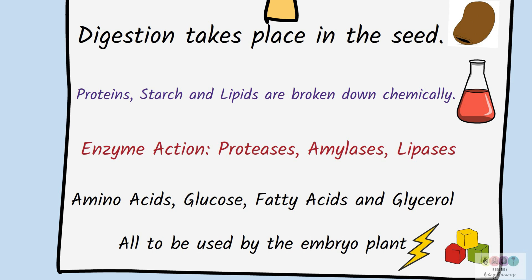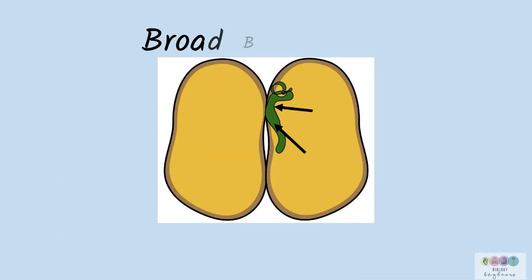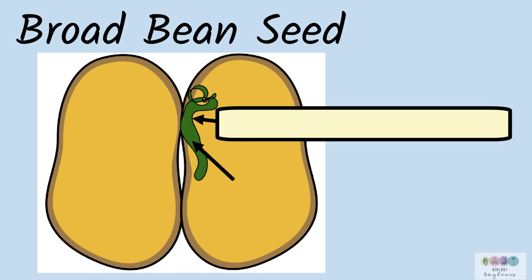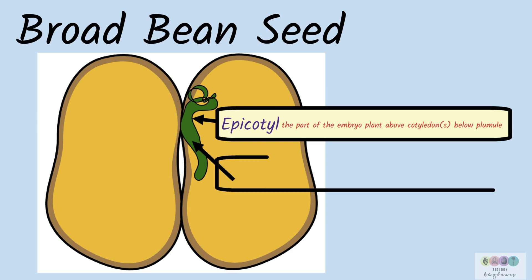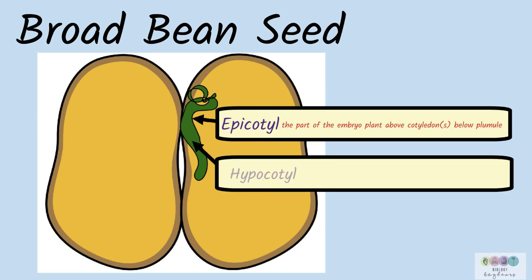Let's look at this broad bean seed. There are two specific labels to draw attention to — there are other labels you must know, so revise the seed. The top label is the epicotyl: it's the part of the embryo plant above the cotyledons and below the plumule. The hypocotyl is the part of the embryo below the cotyledons but above the radicle — and that has not been asked yet but could be asked.